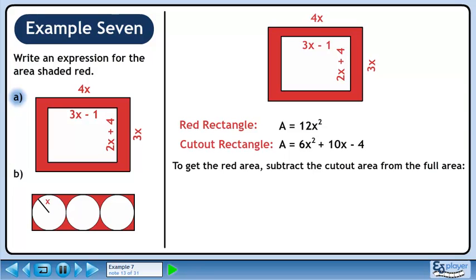To get the red area, subtract the cutout area from the full area. This gives 12x² minus (6x² plus 10x minus 4). Make sure you use brackets when subtracting a polynomial. Distribute minus 1 through the brackets. Collect the x² terms to get 6x² minus 10x plus 4. This is the area of the red shaded region.